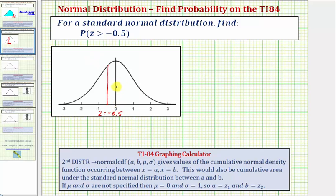Therefore, the probability that z is greater than negative 0.5 is the same as the area under the standard normal distribution curve to the right of negative 0.5, which would be this area here.